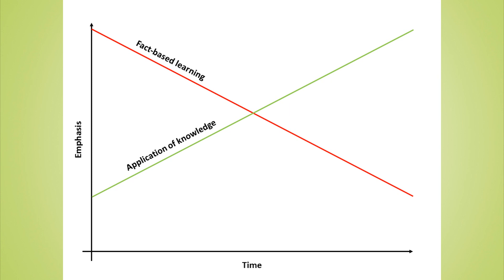Now there's no specific age for this transition to take place — it's based on the developmental ability of the child. Some children may not be capable or very good at applying knowledge, but that doesn't mean you eliminate this because of their age. They should still be learning to apply knowledge.